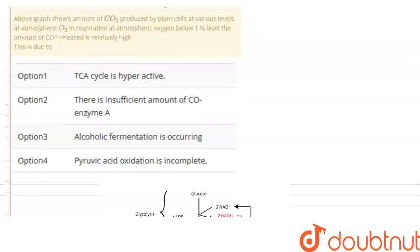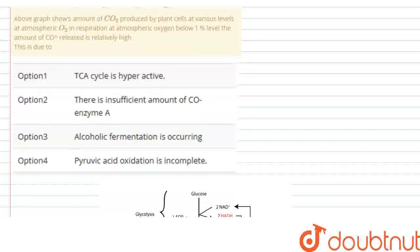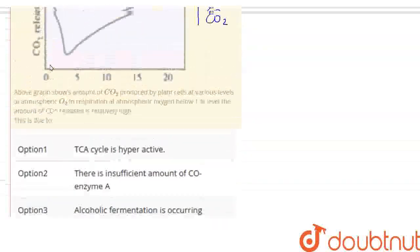There are four reasons given: The TCA cycle is hyperactive, there is insufficient amount of coenzyme A, alcoholic fermentation is occurring, and pyruvic acid oxidation is incomplete. So which reason does it matter?